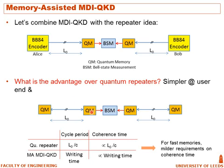In a quantum repeater scenario, the rate at which we can distribute entanglement between adjacent nodes is restricted by the transmission delay between those nodes. In our scheme, however, we can send photons one after another, and so long as we have a heralding scheme for the quantum memory — which in our paper we have shown how to achieve — there is no restriction on the transmission rate except the writing time into the memories. So in principle, if we have a fast memory, we can run our scheme faster than quantum repeaters, implying that the coherence time required for our scheme is lower than what is needed for the repeater scheme.